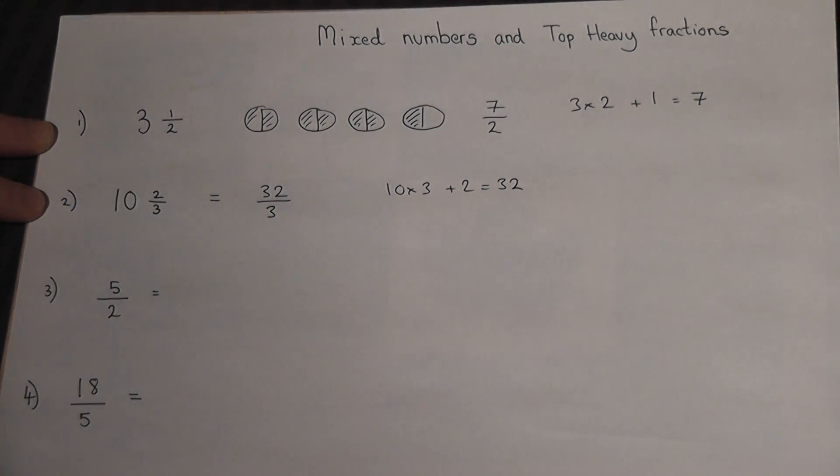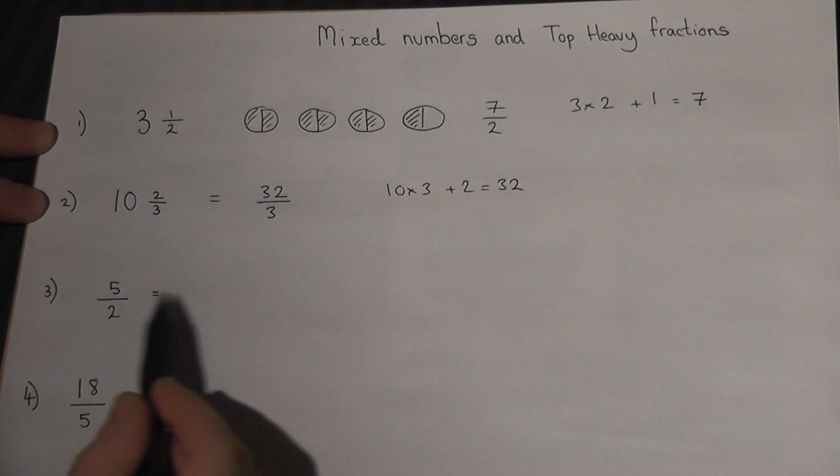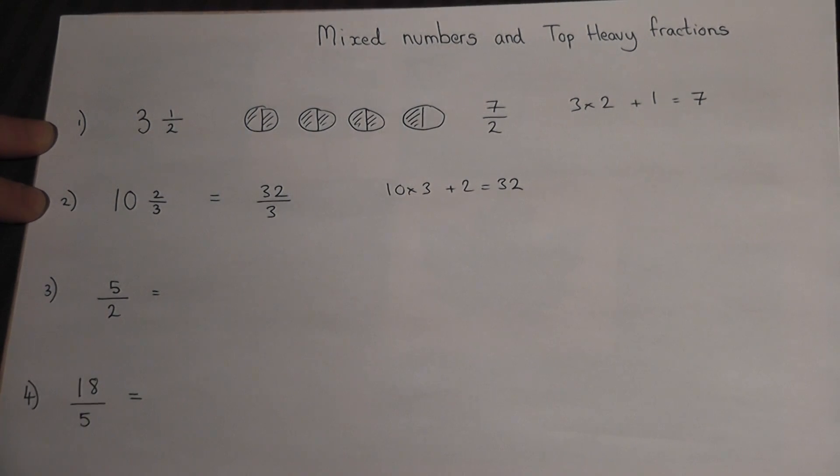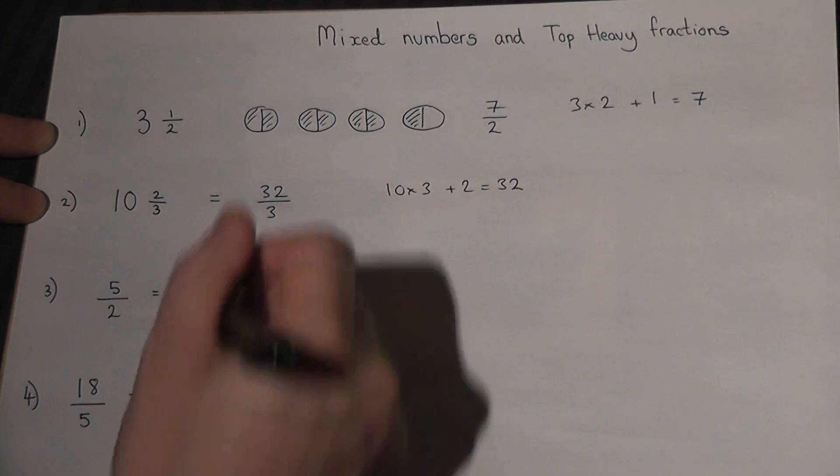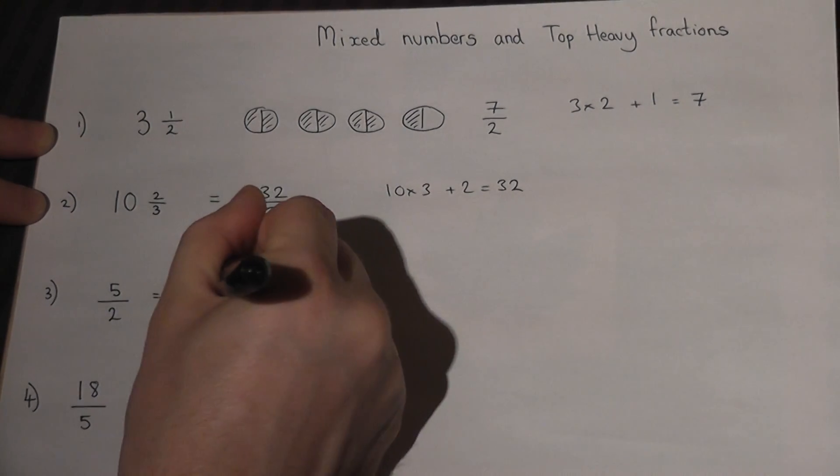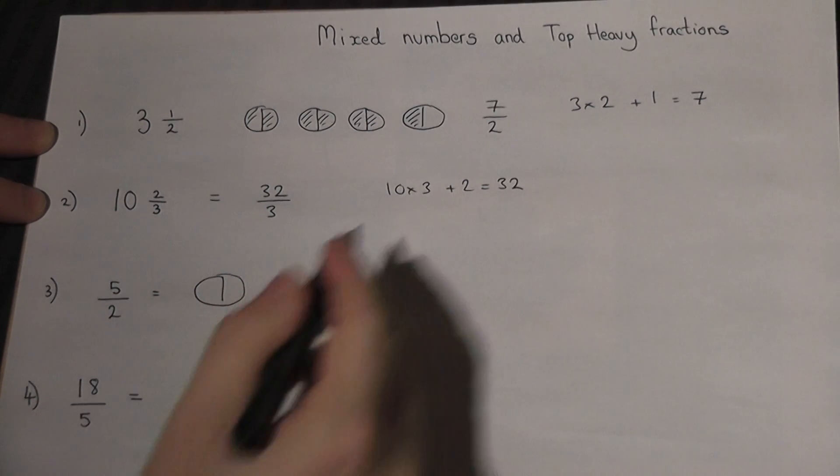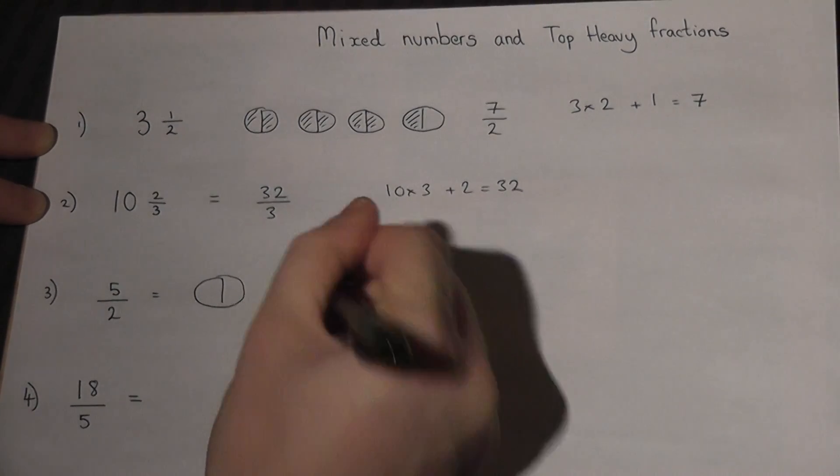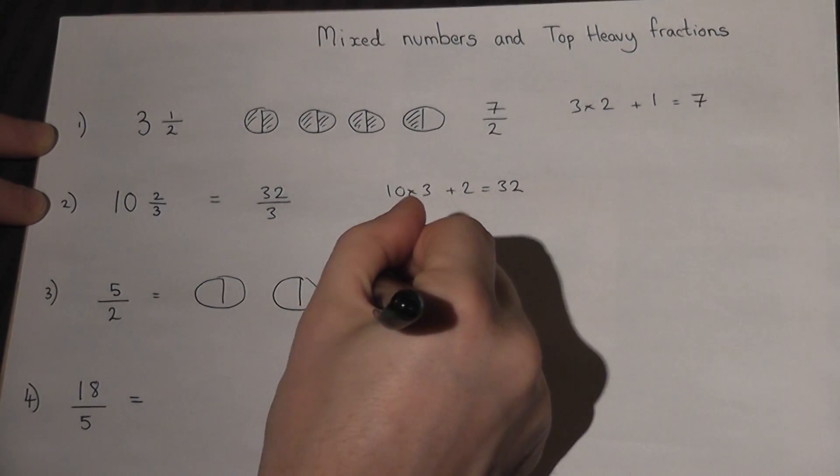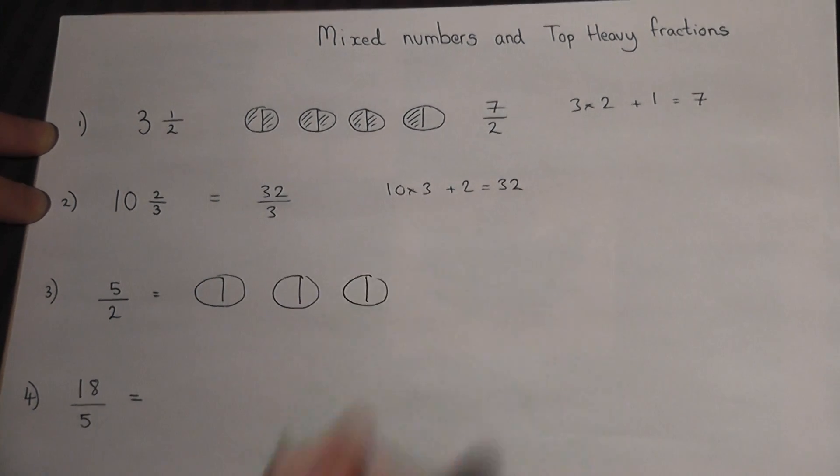Now we can also go the other way around, which is going from top heavy to mixed. Five over two means five halves. So we've got one half, two halves, three halves, four halves, five halves.